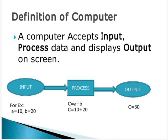Input is what we give to the computer. For example, a is equal to 10, b is equal to 20 — we ask the computer to perform addition and display the output. Process is performed by the computer, that is our CPU. It adds the a plus b value and stores it in c. After processing, it is displayed on the screen — c is equal to 30 is displayed. So a computer accepts input, processes the data, and displays output on screen.